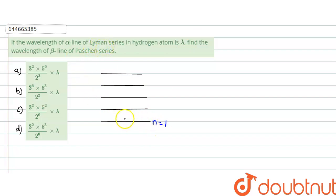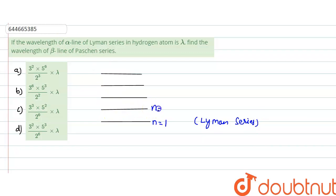For the Lyman series, the transition ends at n equals to one. Since it is given as the alpha line, the transition starts from n equals to two. So the transition from n=2 to n=1 is our alpha line of the Lyman series.